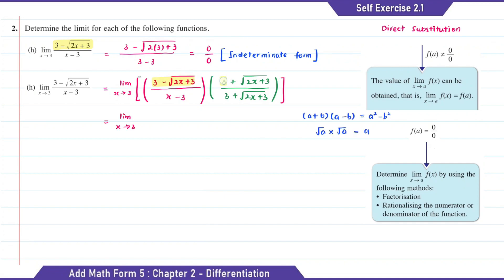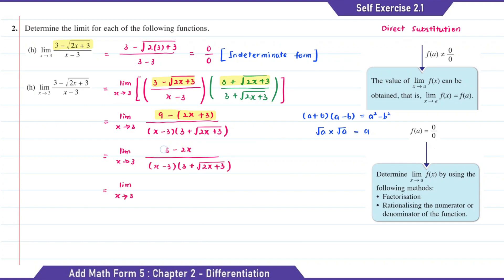When we expand the numerator, 3 squared is equal to 9 minus (2x plus 3). The answer for the numerator will be 9 minus 3, which is 6 minus 2x. For the numerator part, as the common factor is 2, when we factorize it, we're going to get 2 bracket (3 minus x).